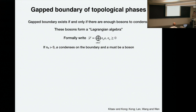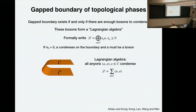Formally, we write this L, the Lagrangian algebra, as kind of the sum of the bosons you condense. This sum is the same direct sum you see when you write a fusion, with weight coefficient n_a. When n_a is greater than zero, it means that boson is condensed. If n_a is greater than one — for example, in the S3 gauge theory, if you try to break the whole S3 down to nothing, equivalent to condensing all the gauge charges, and the two-dimensional representation must appear with coefficient two.